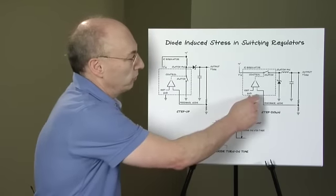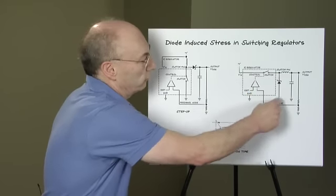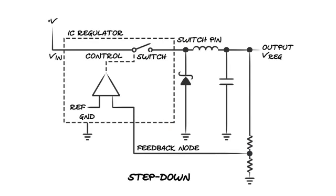You've got the same problem in reverse. On a buck regulator, you'll turn on the substrate with extreme negative going excursions due to delayed turn-on time in the diode.